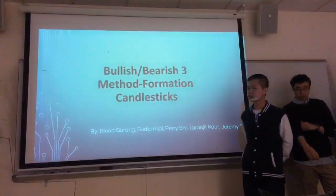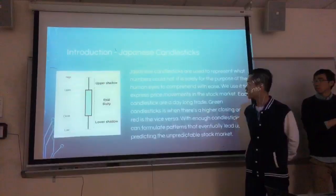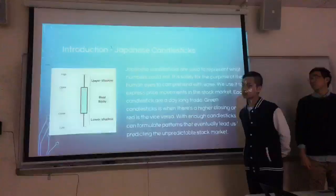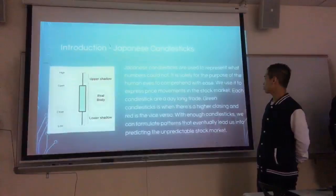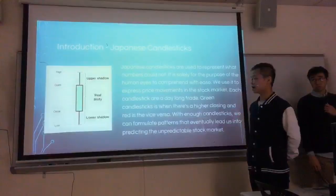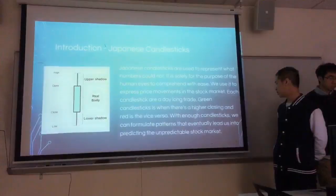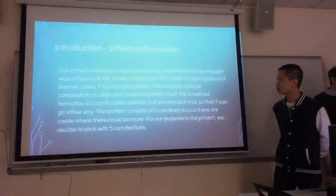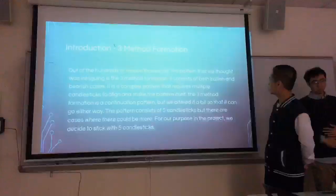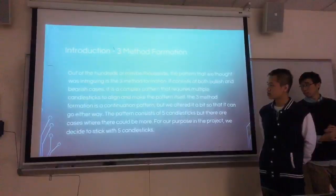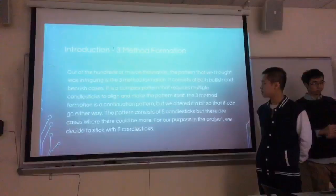We are doing the bullish bearish three method formation candlesticks, and this method is a bit more complex than others because we are looking at a five-day range for the pattern. For introduction on Japanese candlesticks, they are used to represent numbers solely for the purpose of the human eye to comprehend and for ease of looking at patterns. The green candlesticks represent a higher closing and the red is vice versa. With enough candlesticks we can formulate patterns that actually lead us to predicting the stock market. For the three method formation, out of hundreds or maybe thousands of patterns, we thought this was the most intriguing. It consists of both bullish and bearish cases. It is a complex pattern that requires multiple candlesticks to align that makes the pattern itself.